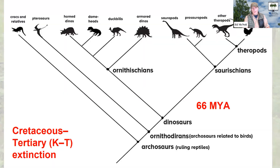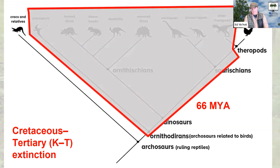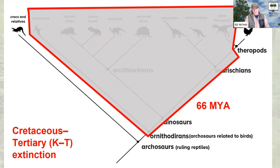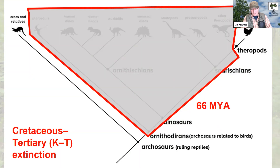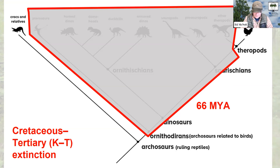So where are we today? We've got this phylogenetic tree showing where theropods evolved and where archosaurs are. 66 million years ago we had the Cretaceous-Tertiary extinction, which wiped out the vast majority of these groups. All the theropods were wiped out except for birds, and within archosaurs, birds and crocodilians are the only remaining groups today. Birds and crocodilians are very distantly related groups that are each other's closest relatives today.